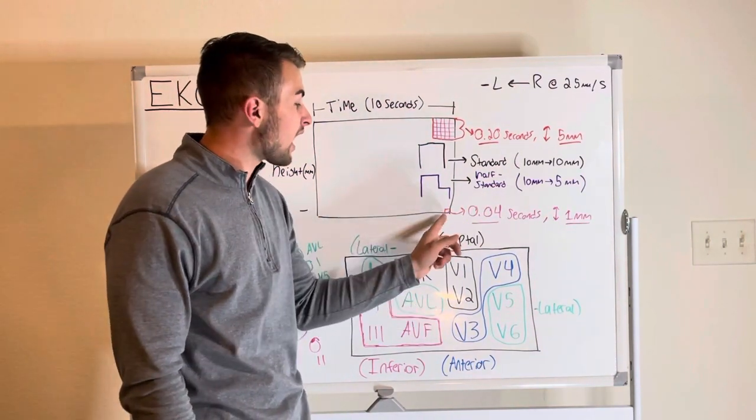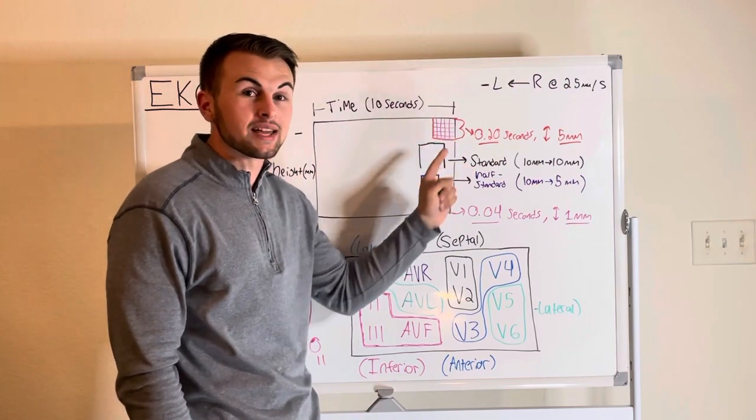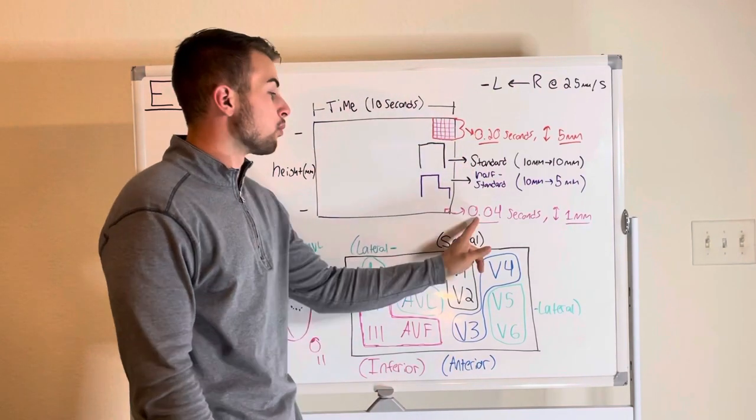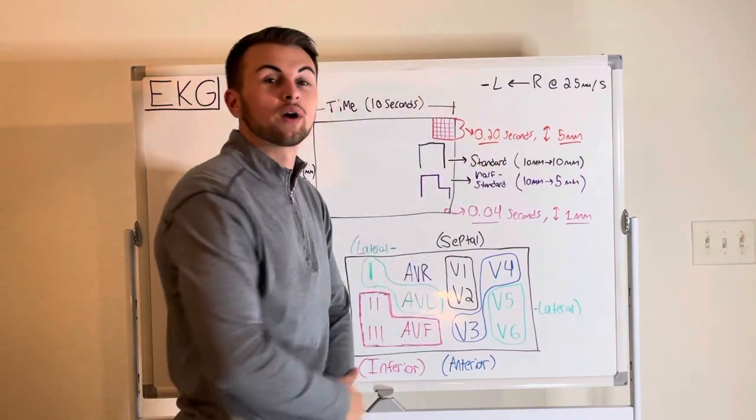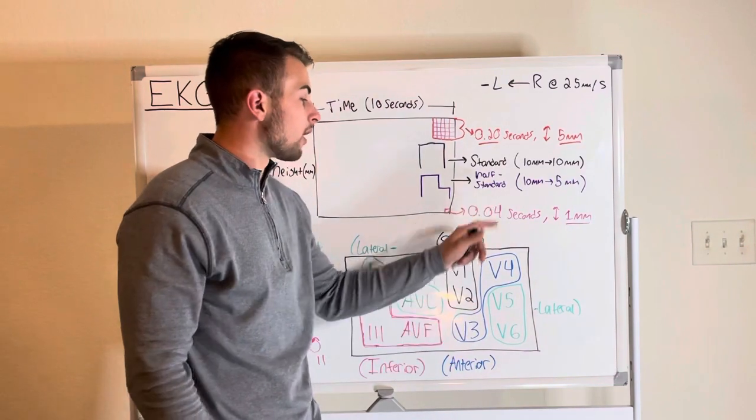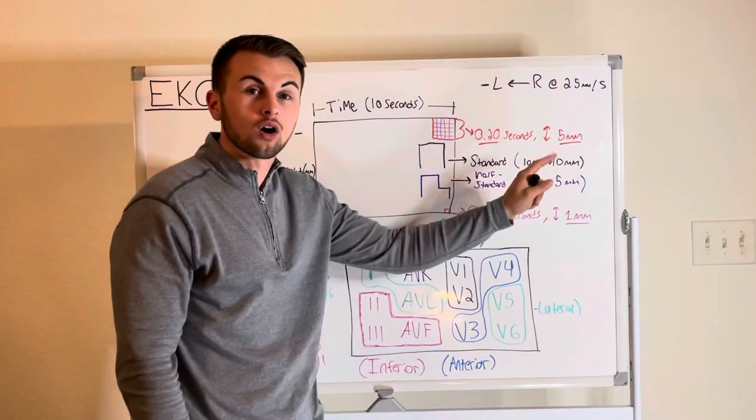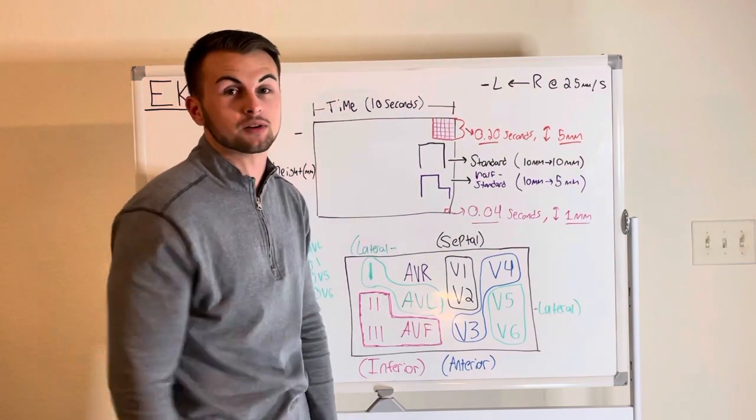Now there are five of these little boxes in one big box which means that a big box is 0.04 times 5 which equates to 0.2 seconds. Also note the small box is one millimeter tall while the big box is five little boxes so it is five millimeters tall.